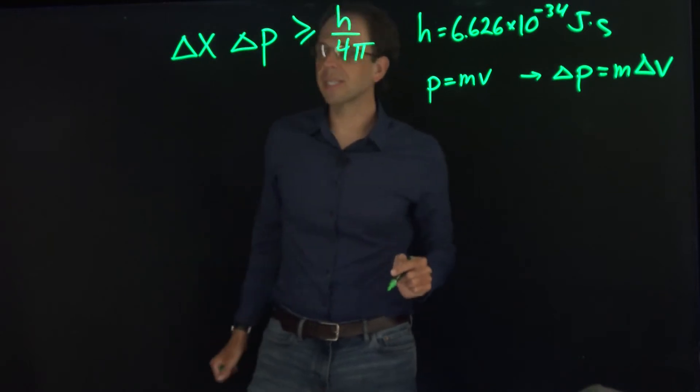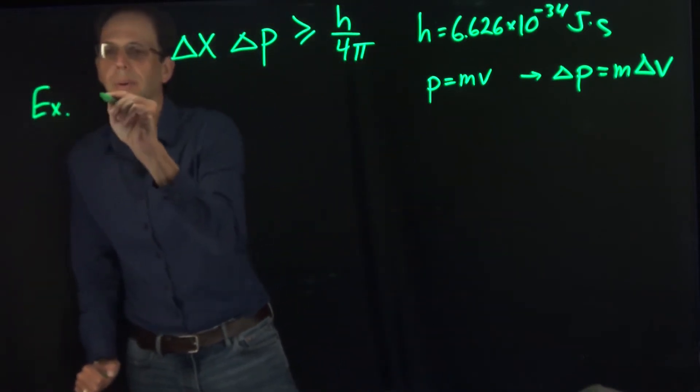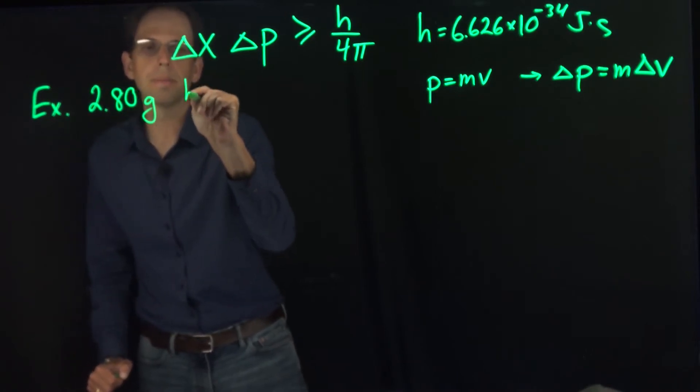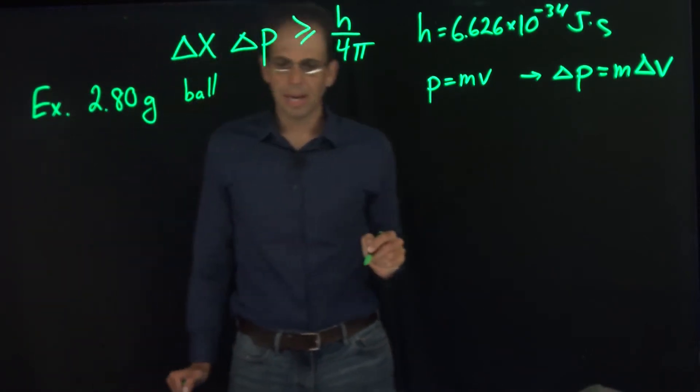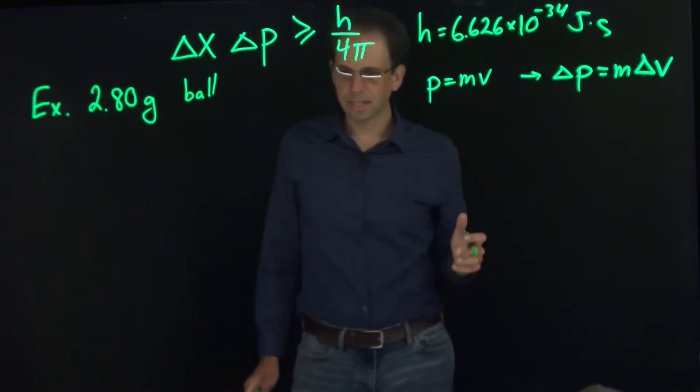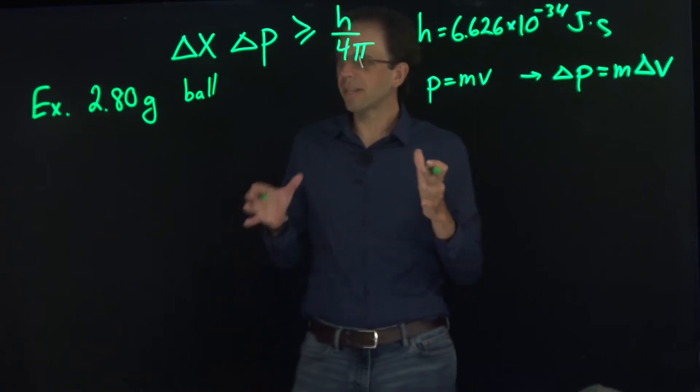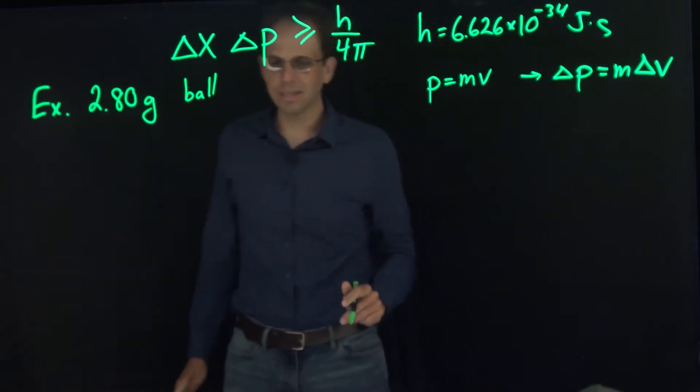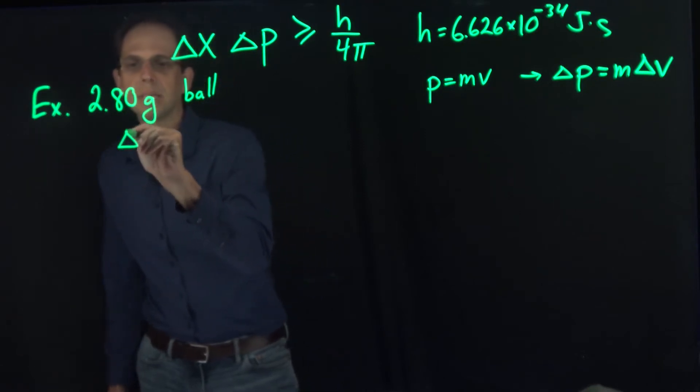So let's do an example of this. Let's say we have a 2.8-gram ping-pong ball, and we measure its position with a red laser at 675 nanometers. So 675 nanometer uncertainty in its position.